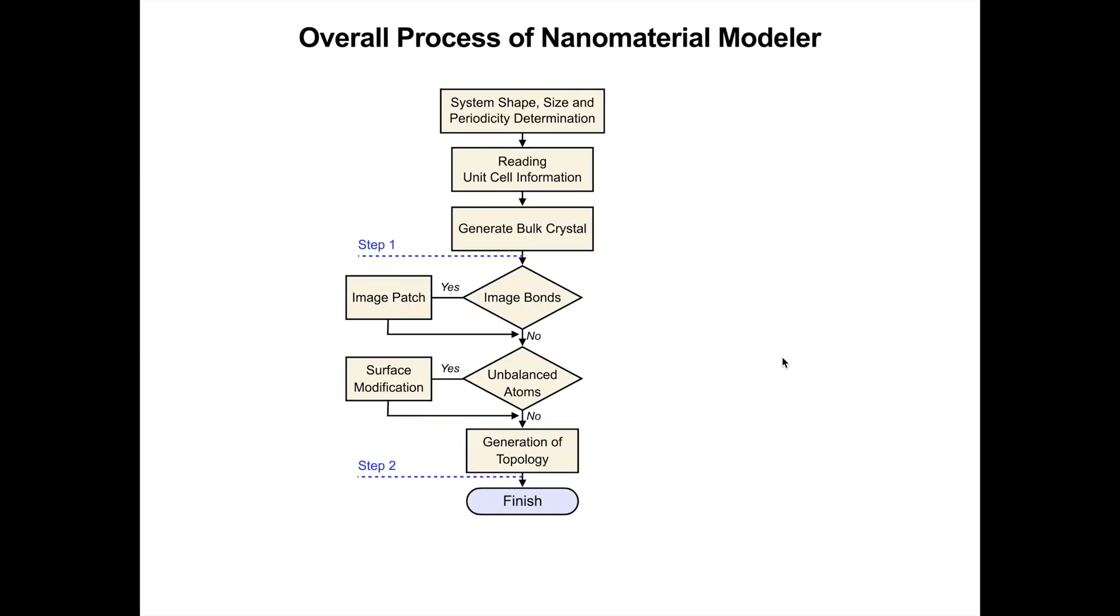The overall process of building a nanomaterial system is generalized and automated in two steps. Individual input and output files including generated structures and an archive of the created files are available in each step.